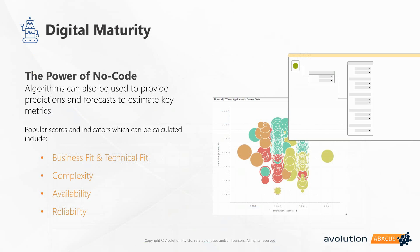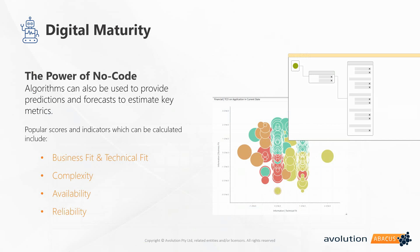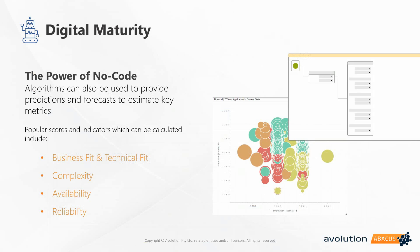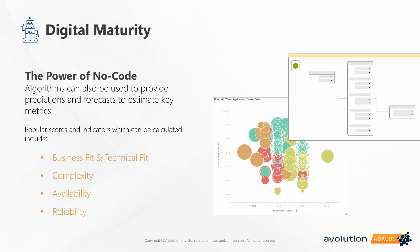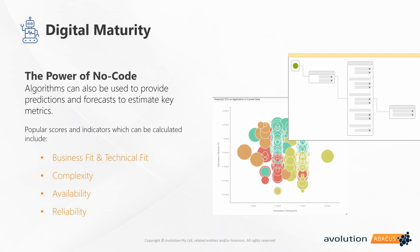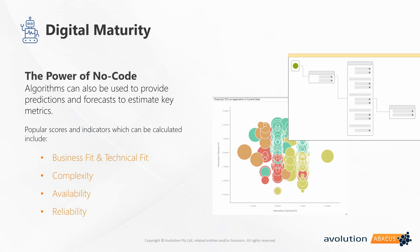Digital maturity is also going to benefit from the power of no-code algorithms, and the power that comes from having algorithms that produce objective data allowing decision makers to be genuinely informed. Algorithms can also be used to provide predictions and forecasts to estimate key metrics. Some common examples are business fit and technical fit for applications, so we can see how well they are serving our needs. Complexity — the number of connections to technical or business elements — is also a key one. Availability and reliability are also key metrics. Here on the right, you can see an example of building out a no-code algorithm, or what we in Abacus call a visual algorithm, as well as an example of applications mapped with business fit against technical fit and their corresponding suggestions.